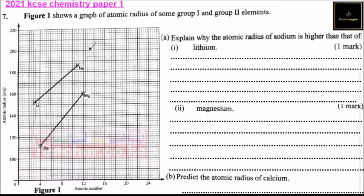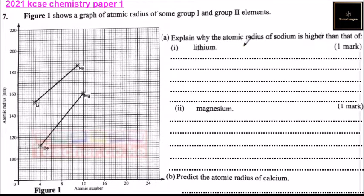Question number 7. Figure 1 shows a graph of atomic radius of some group 1 and group 2 elements. We have lithium and sodium, and we have barium and magnesium. The y-axis shows the atomic radius and the x-axis shows the atomic number. Part A explains why the atomic radius of sodium is higher than that of lithium.